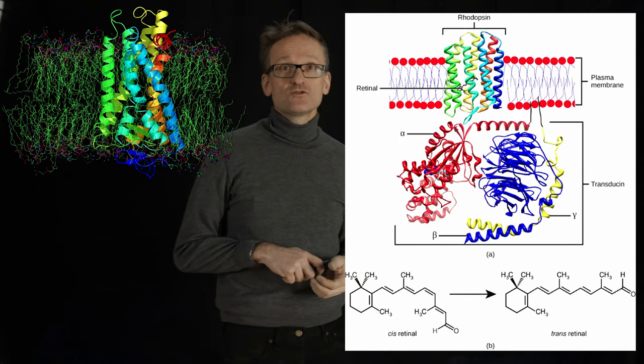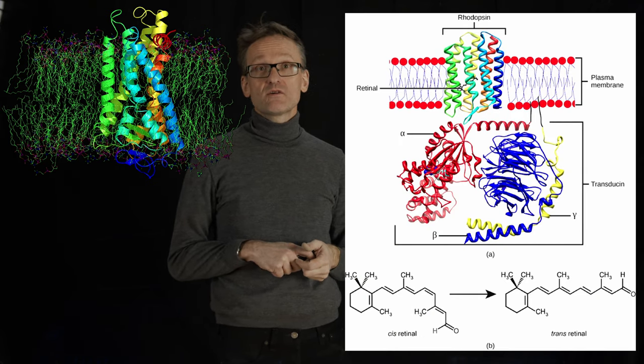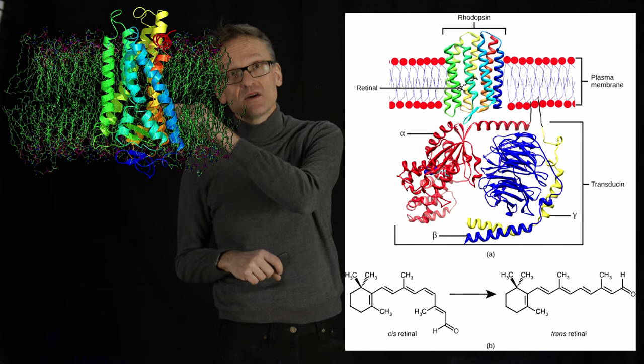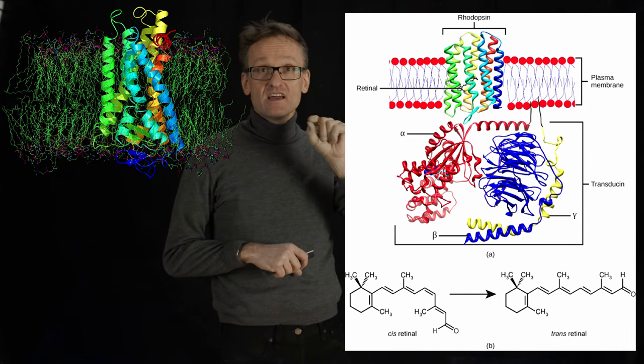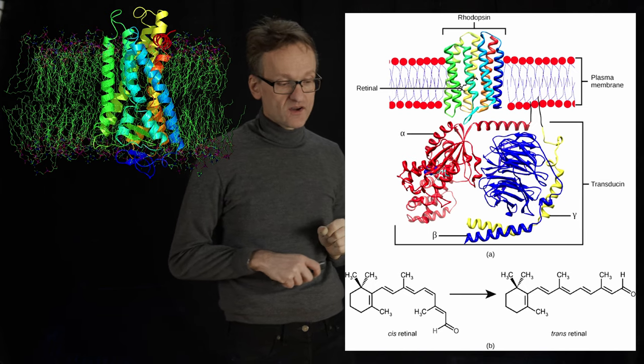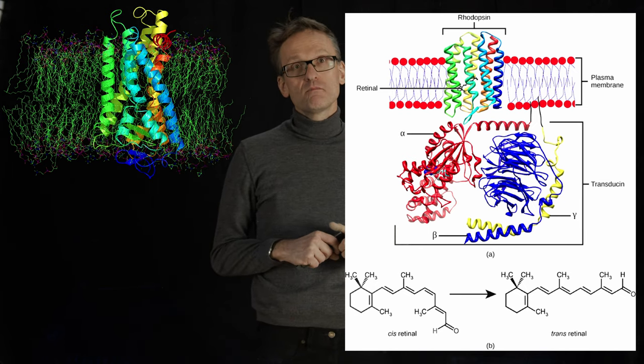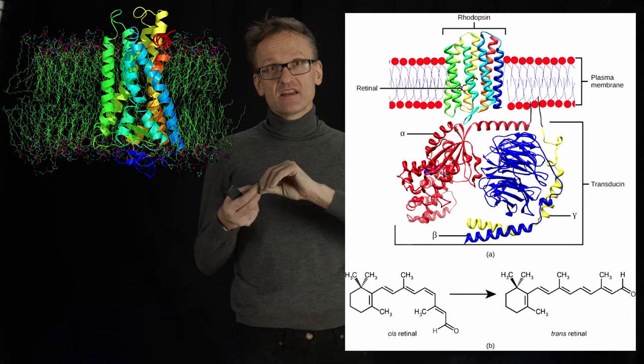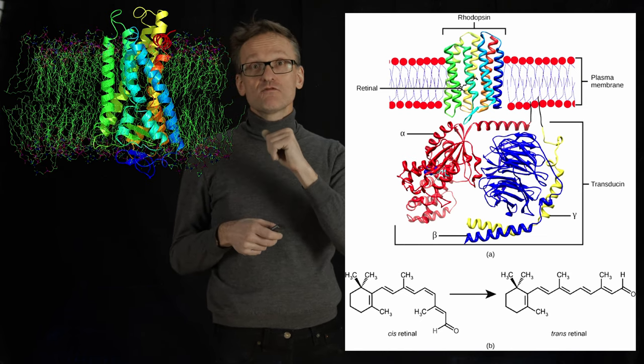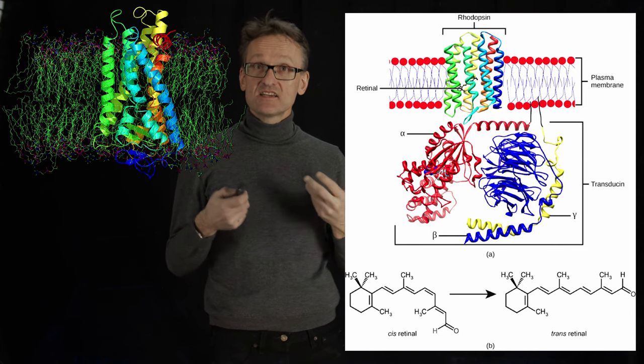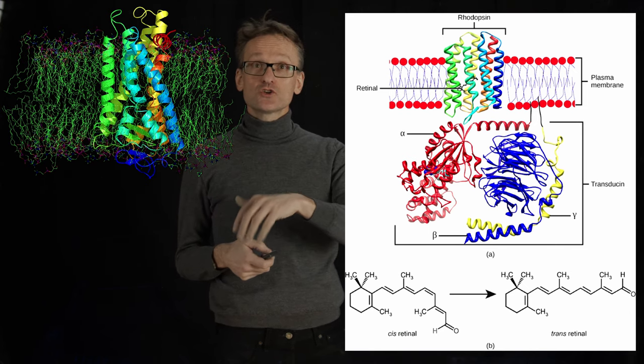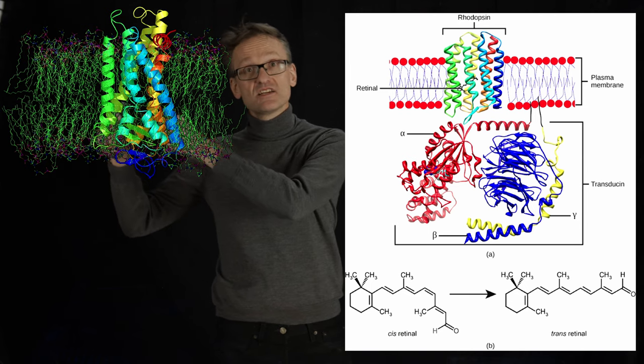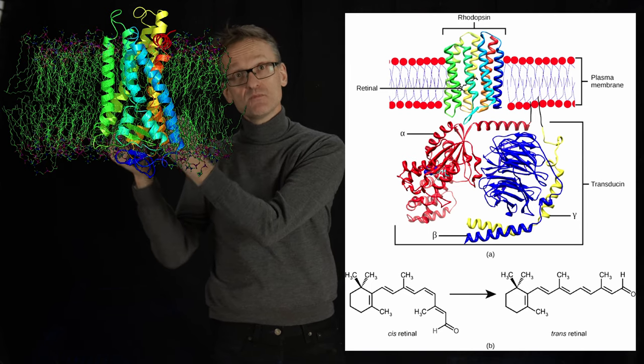The way that happens is that you have a molecule with a so-called retinal bound, so it's a rhodopsin that looks like this, and in the middle of this protein we have a small organic compound bound. That compound has a double bond in the middle that is normally in cis configuration, but when light hits this compound it switches over to a trans conformation, and that trans conformation causes the entire protein to change shape a little bit.